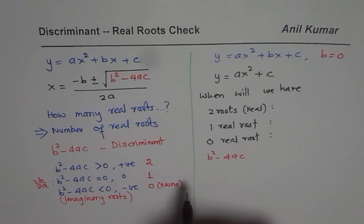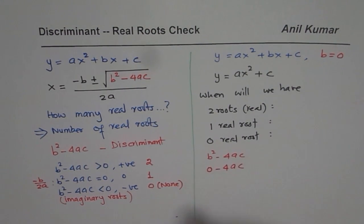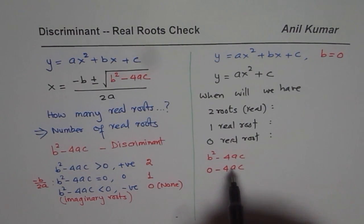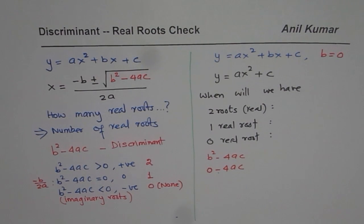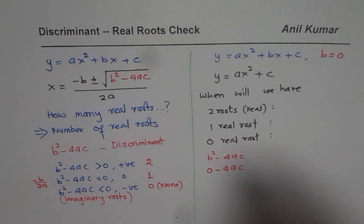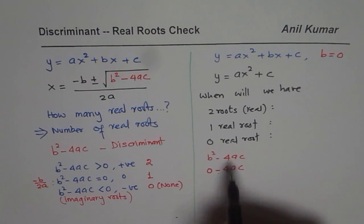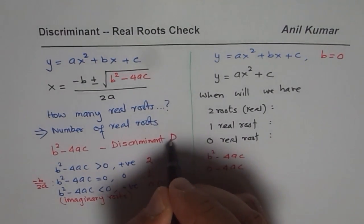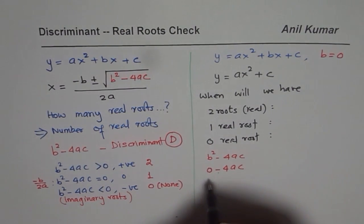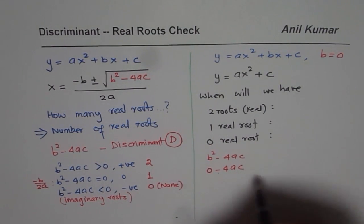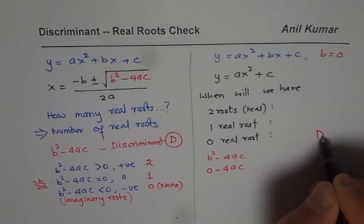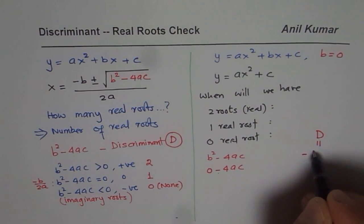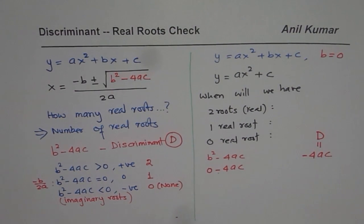Now here b is 0. Since b is 0, we can write the discriminant as 0 minus 4ac. Now a and c could be positive or negative and will yield different values — the discriminant could be 0, positive, or negative. Since the b squared term is 0, we get discriminant D equals minus 4ac.